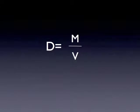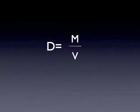It is important to remember your formula for density. Density equals mass over volume. Mass is always measured in grams and volume is typically measured in milliliters or cubic centimeters. For this lab you will use milliliters to measure your volume.